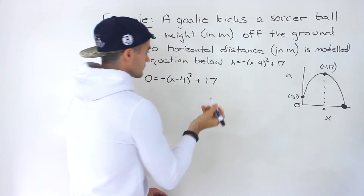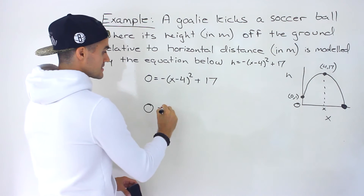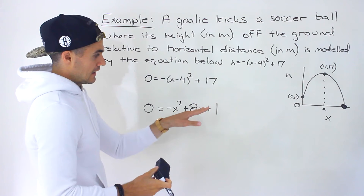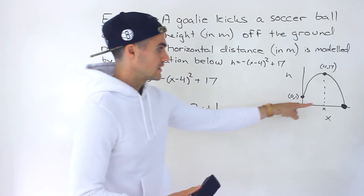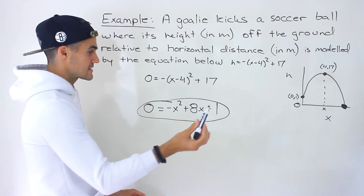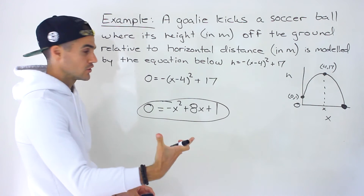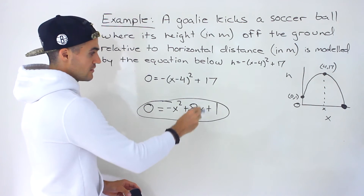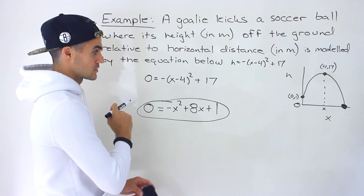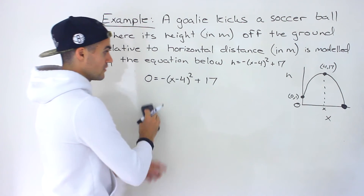One thing to mention is that we can't use the standard form at this point in the course, because this quadratic won't factor smoothly — we'd end up with a decimal value. To solve a quadratic like that, we'd have to use the quadratic formula, which hasn't been covered yet. However, if it's in vertex form, we can solve it with just algebra.